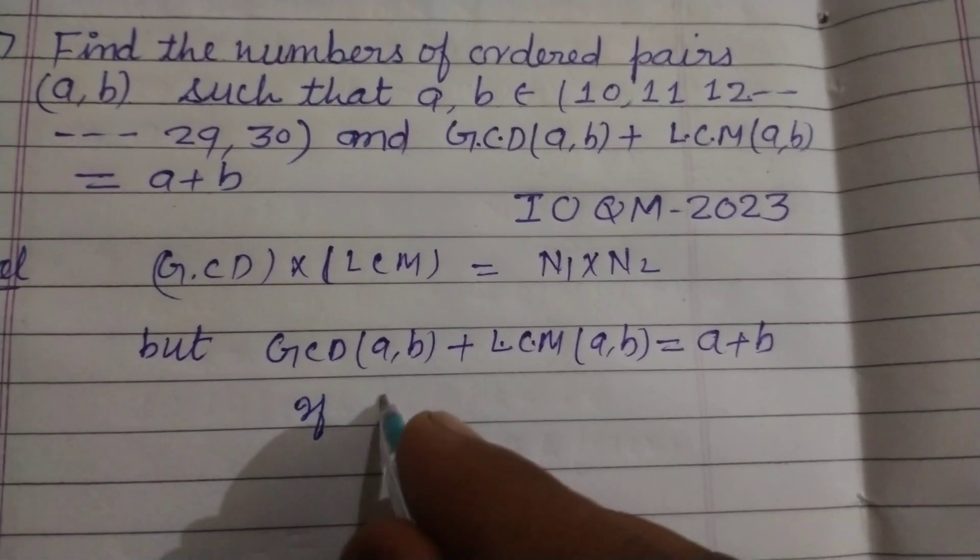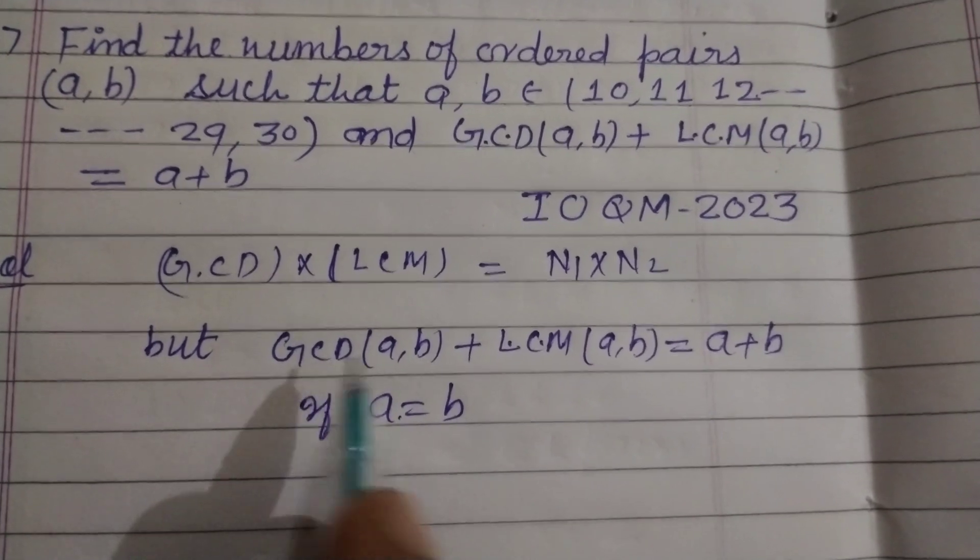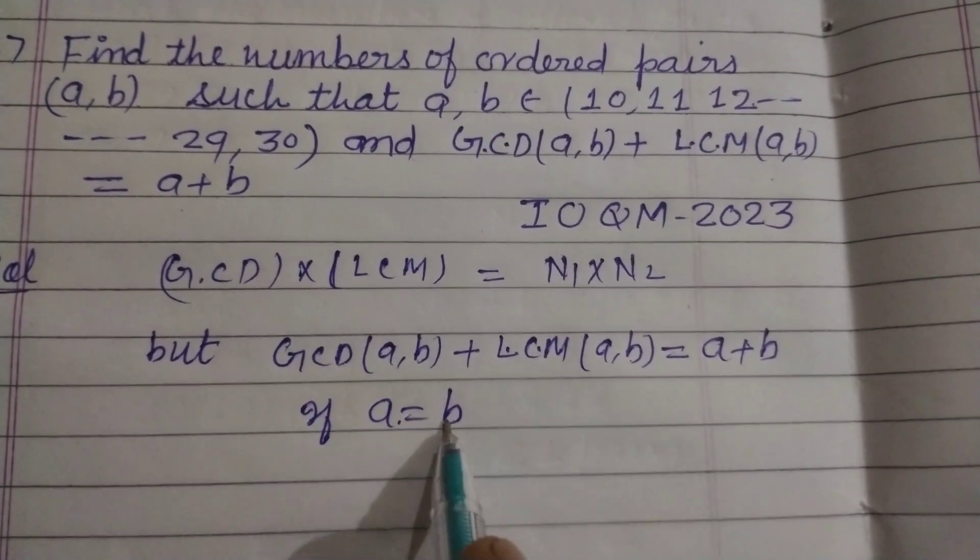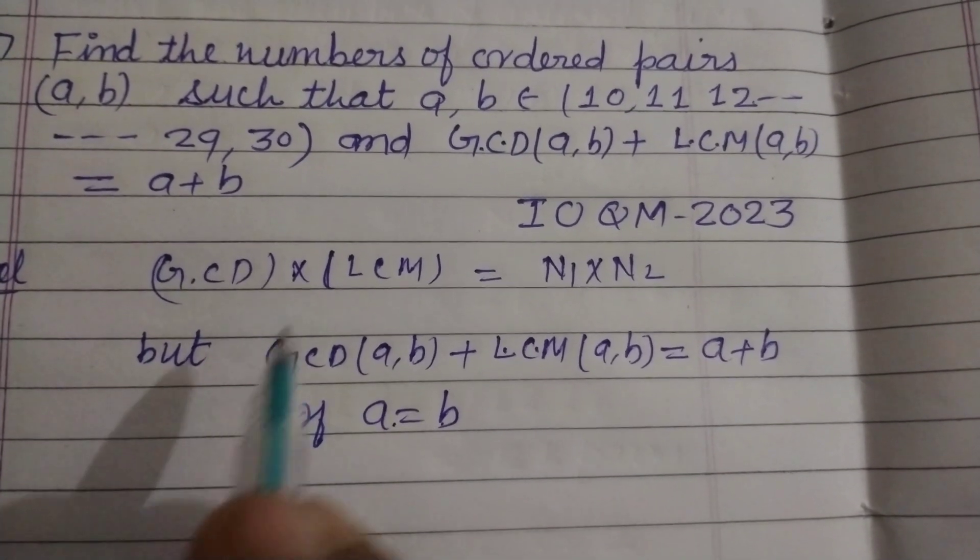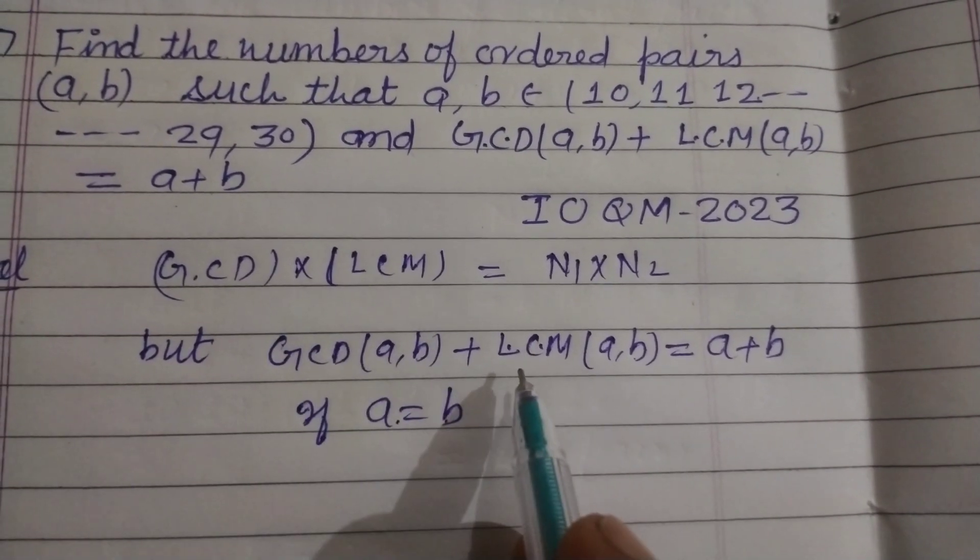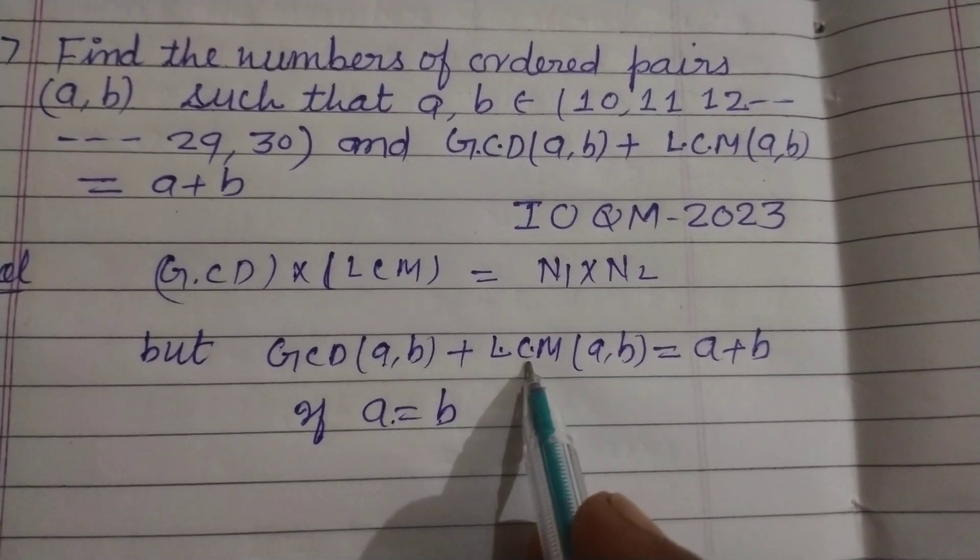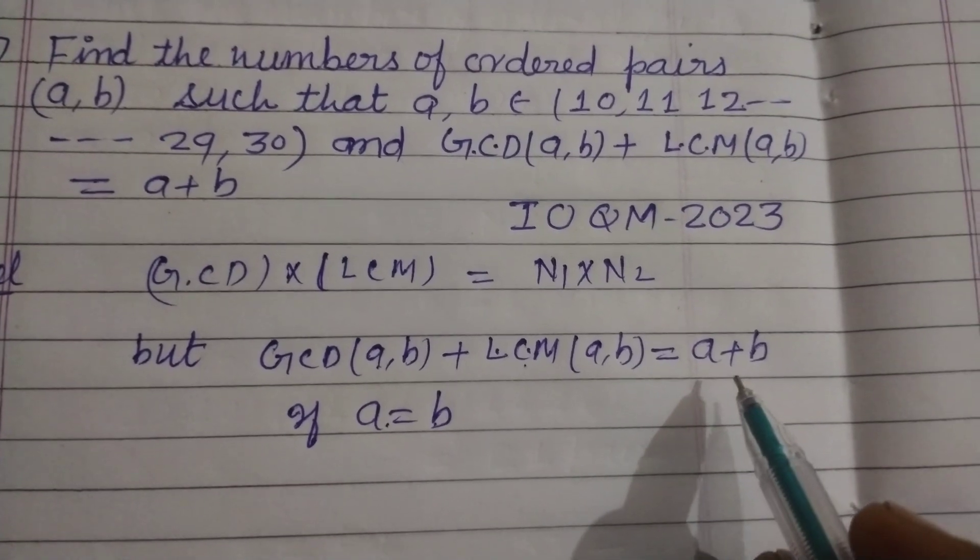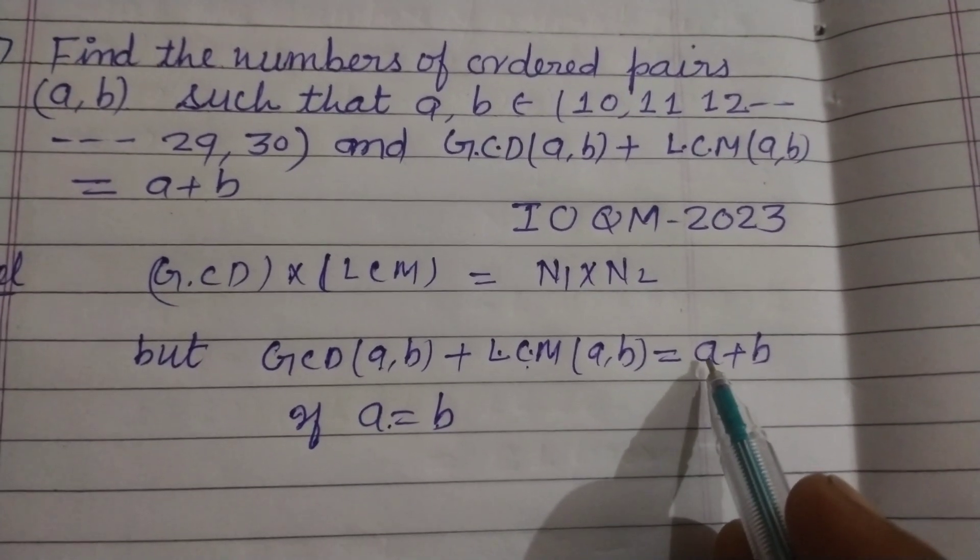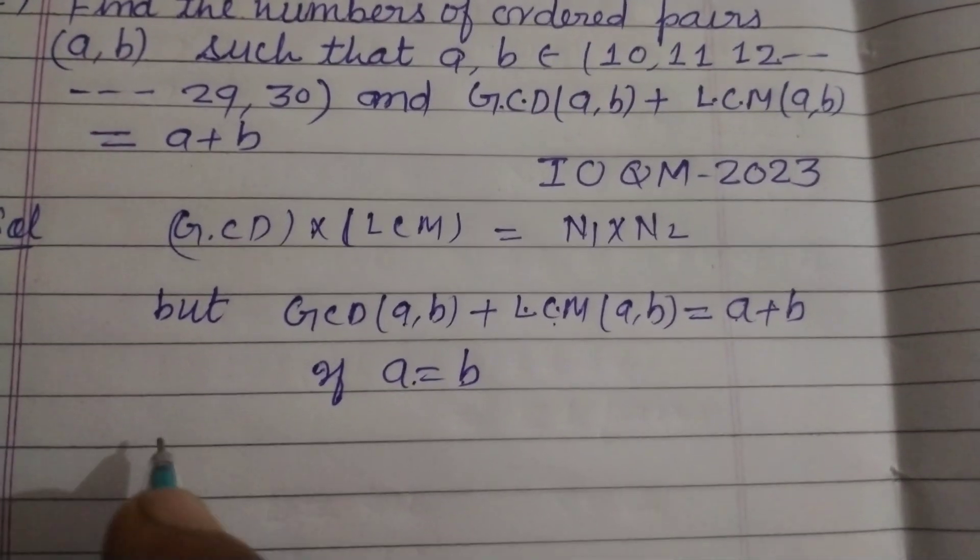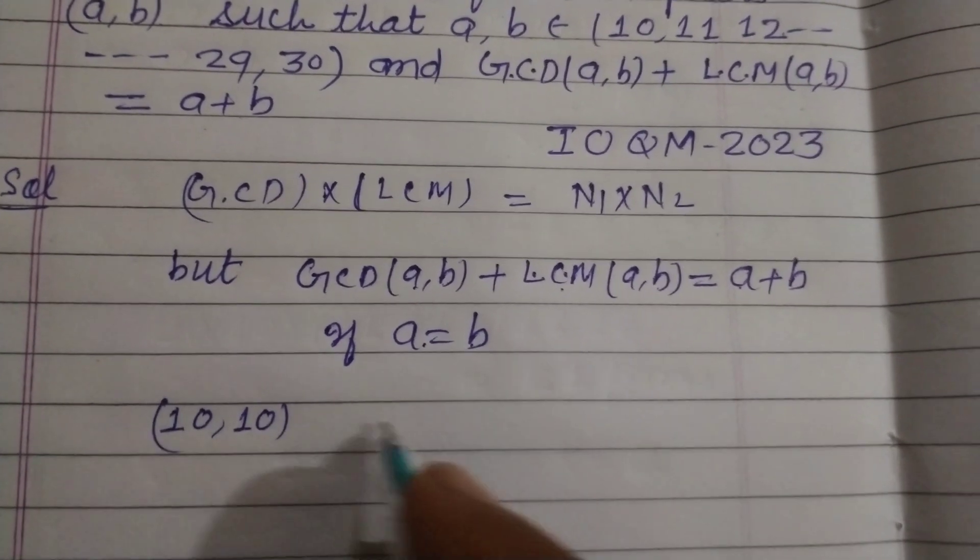If a equals b, this is possible. Because a equals b, both numbers are the same, so they have the same LCM as well as GCD. So GCD plus LCM equals the sum of the numbers. Like (10, 10), if we make the pairs like this: